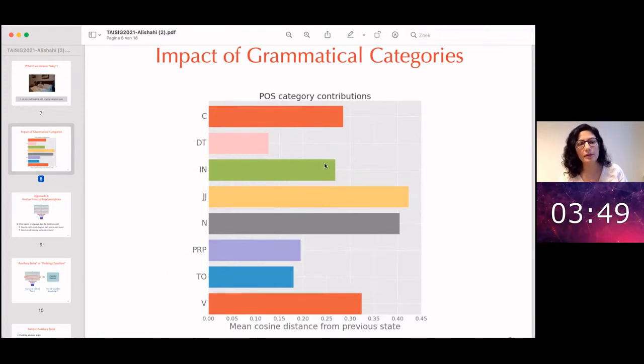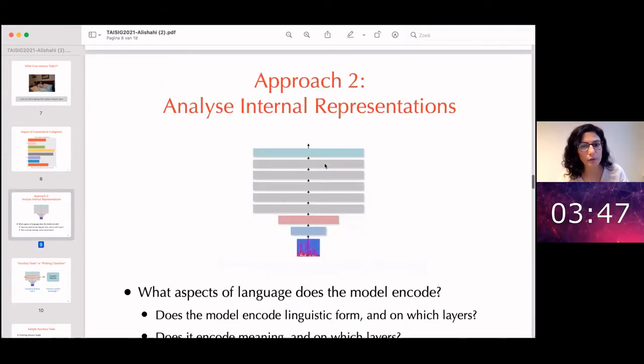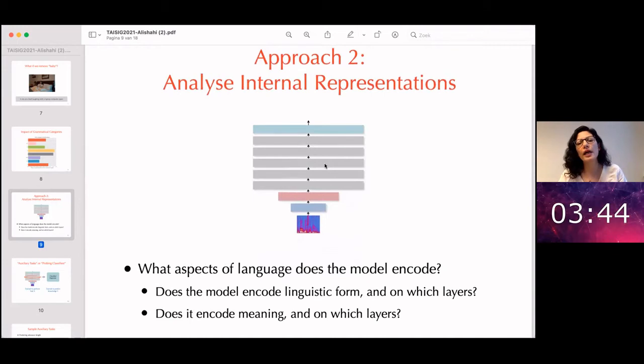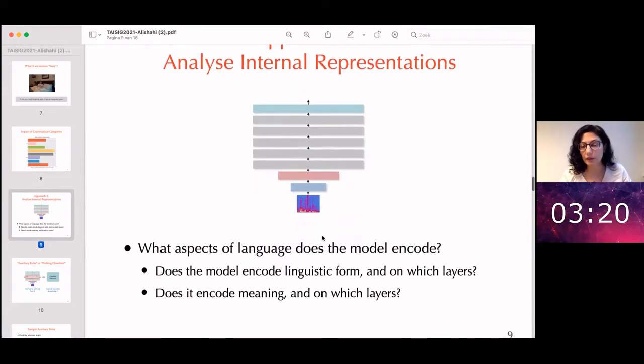This takes us to the next approach. Here the idea is that we want to actually analyze these internal representations that these deep models learn. The questions that we might want to ask is what aspects of language does the model encode? For example, does the model encode linguistic forms such as words, morphemes, phonemes, syntactic structure, and on which layers does this information get encoded? Does it encode anything about the meaning and again on which layers?